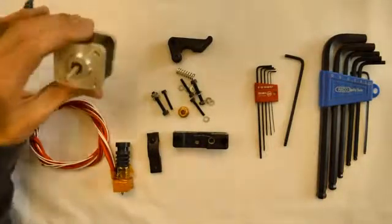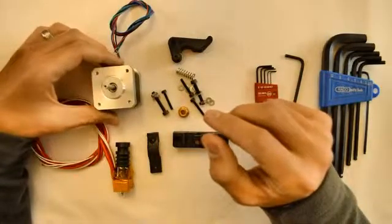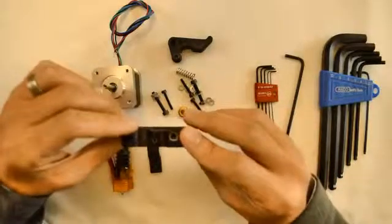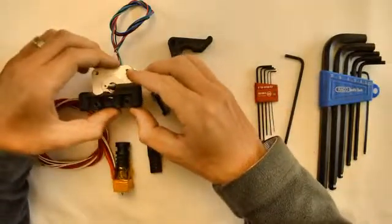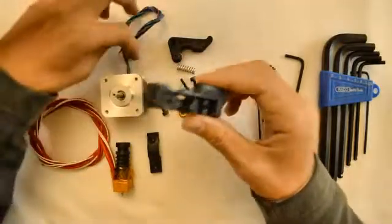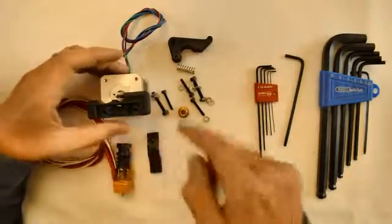Now we will assemble it to the stepper motor. The stepper motor serves as the base or the structure of the extruder. So the base component will fit onto the stepper motor like that. I like to keep my wires at the top. This will be the base of the extruder.